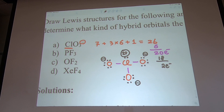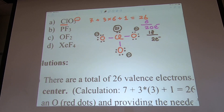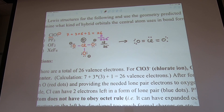To minimize formal charges, we can share electrons and make double bonds. Converting a single bond to a double bond reduces the formal charge. I'll make two double bonds with chlorine and two of the oxygens — a double bond with two lone pairs gives a formal charge of zero. Now formal charges are minimized. This gives us the Lewis structure for ClO₃⁻.